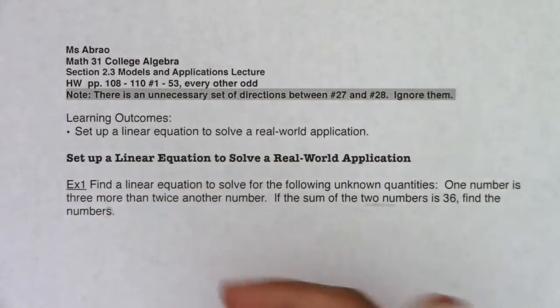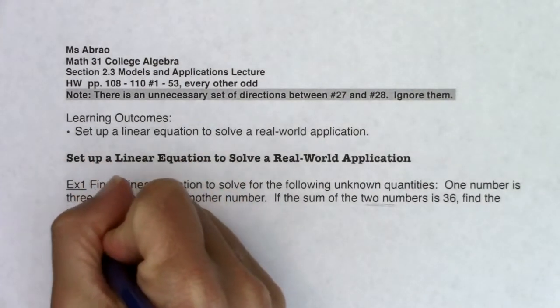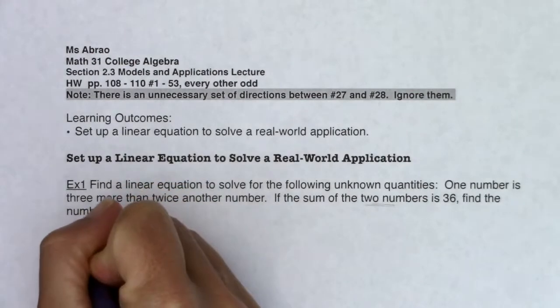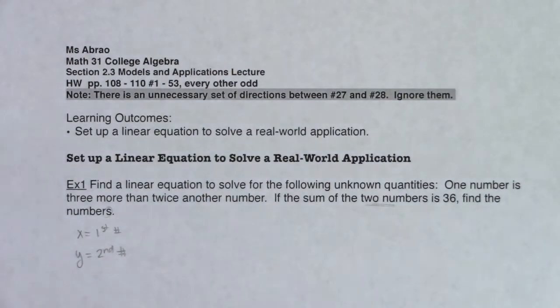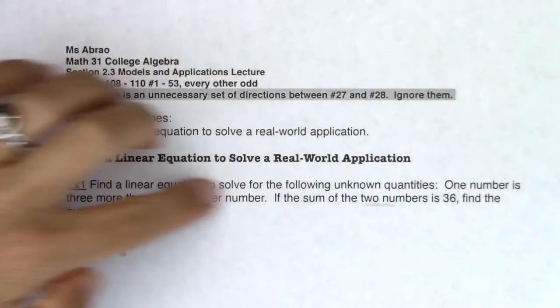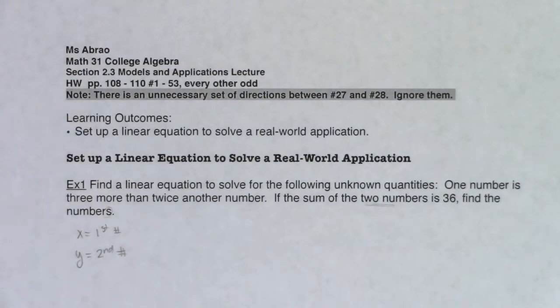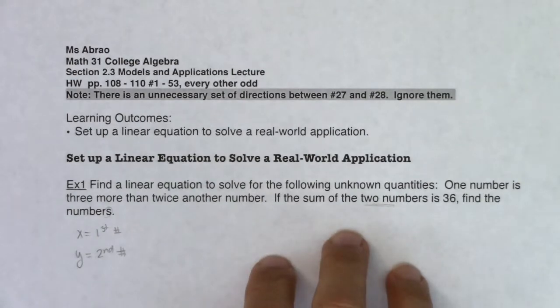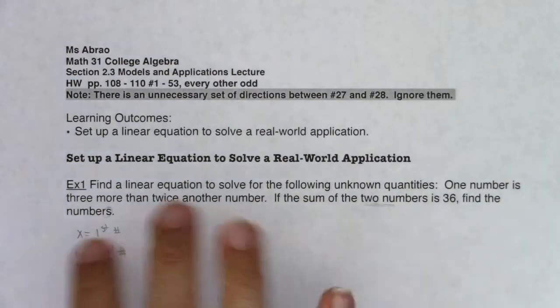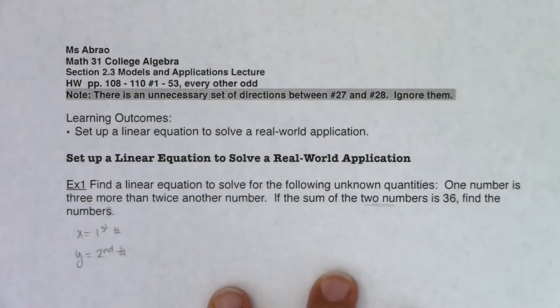You can also see right here in the very last part of this setup it says find the numbers—again, it's plural. So numbers are what is varying in this problem, and it looks like I have two of them. Since I have two of them, I'm just going to call them x and y. You could call them whatever you want, a and b, m and o, it doesn't matter. I'm going to let x be the first number and y be the second number. If we have two variables, there must be two equations hiding out in this word problem. It's a one-to-one ratio: if we've got two variables, we need two equations so we can solve them.